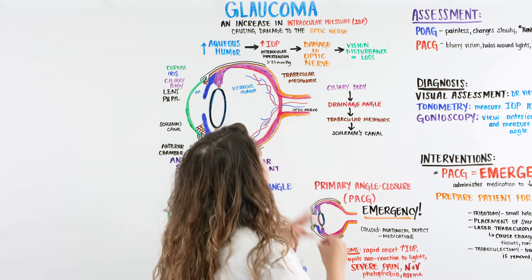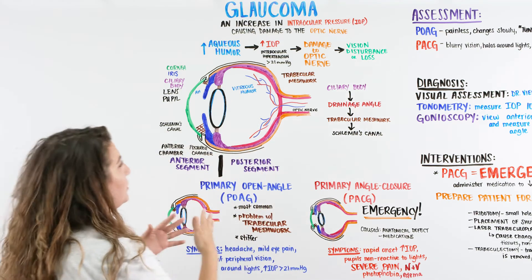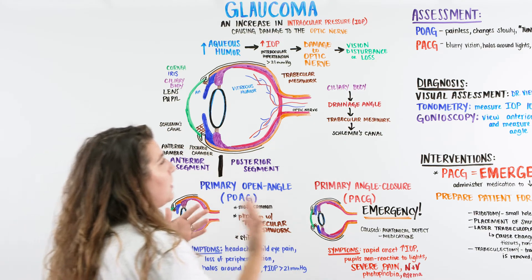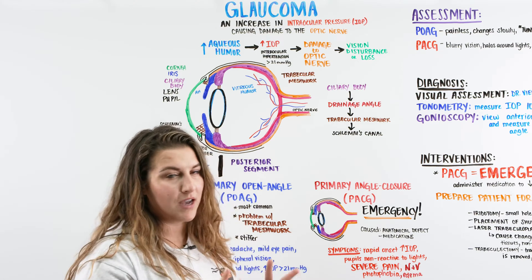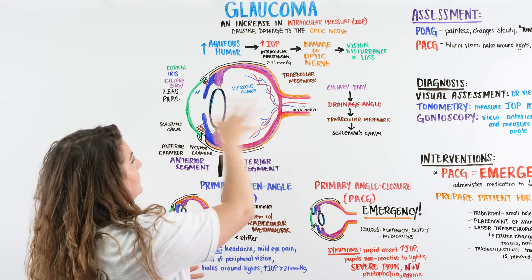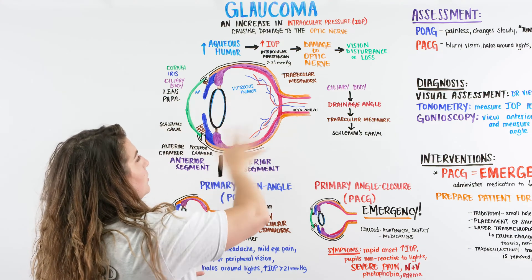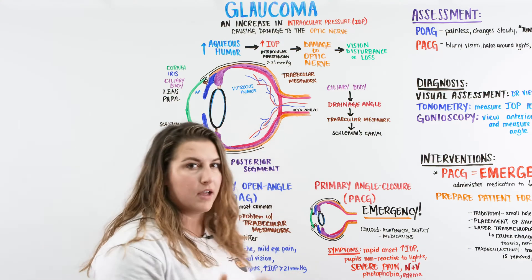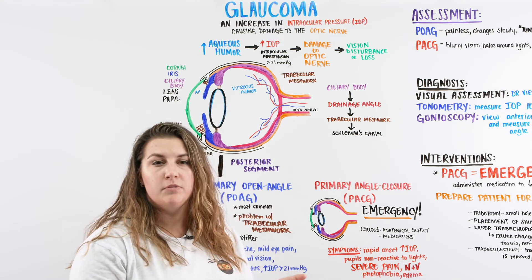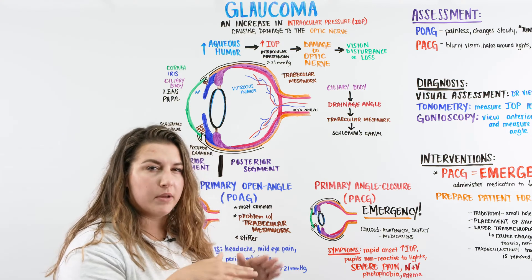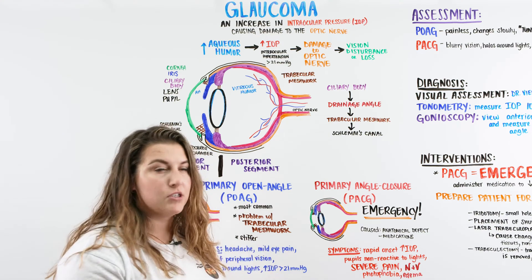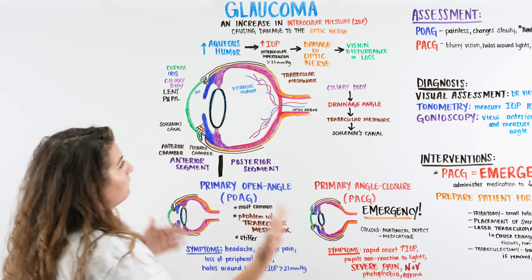Glaucoma is the increase in the intraocular pressure, or IOP, and this causes damage to the optic nerve. We know within the eyeball there is fluid, and that fluid can increase in pressure. That pressure on certain spots creates pressure onto the optic nerve, which can lead to damage and eventually cause problems with our vision and vision loss.